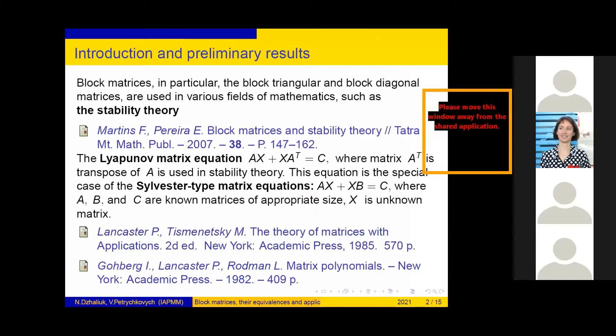In stability theory, the Lyapunov matrix equation AX + XA^T = C, where matrix A^T is a transpose of A, is used. This equation is the special case of Sylvester-type matrix equations AX + XB = C, where A, B, and C are matrices of appropriate size, X is an unknown matrix.